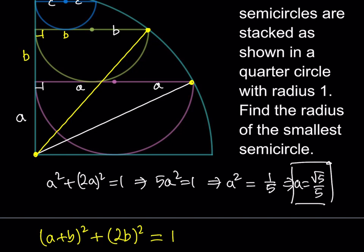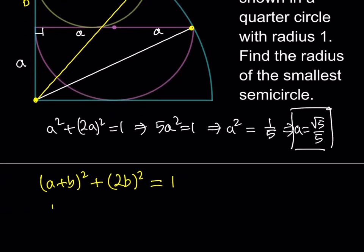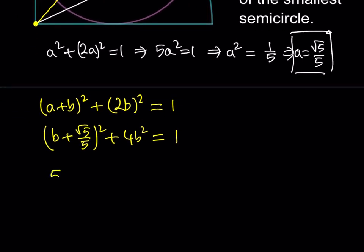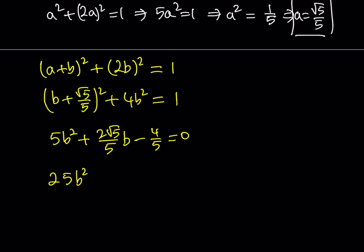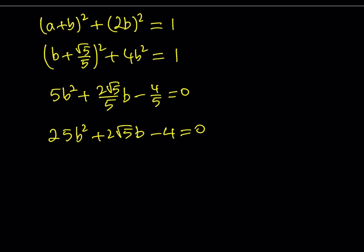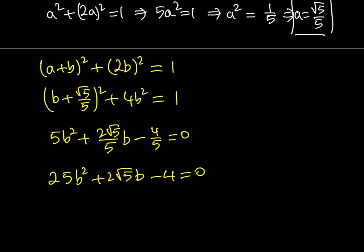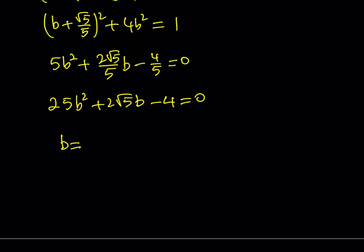So we have (A + B) squared plus (2B) squared equals 1. I do have the value of A, so I can plug it in. This gives me (B + root 5 over 5) squared plus 4B squared equals 1. Arranging this gives a quadratic: 5B squared plus (2 root 5 over 5)B, and 1/5 minus 1 is negative 4/5. Multiply everything by 5 to get a nicer quadratic, then solve using the quadratic formula. Notice from Vieta's formulas that the product of the roots is negative, meaning one root is positive and one is negative — the negative root is not acceptable, so I go with the positive.